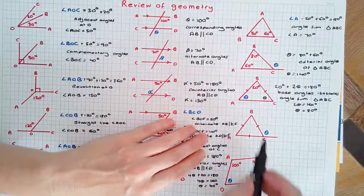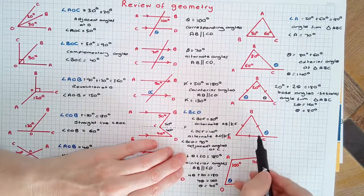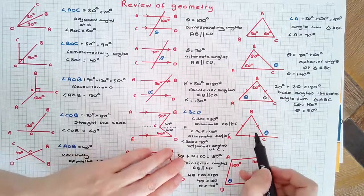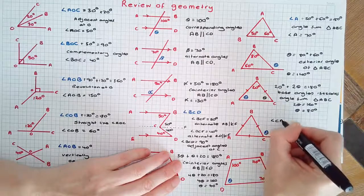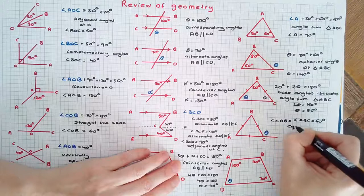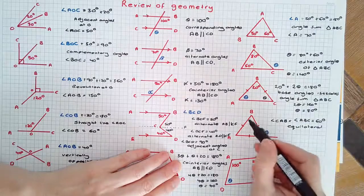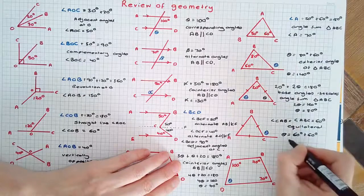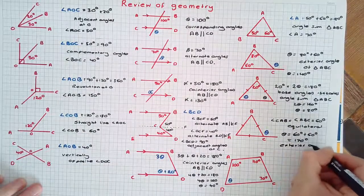Similarly, you may see problems involving equilateral triangles where all three sides are equal and all interior angles are 60 degrees. Using the exterior angle rule, angle CAB is 60 and angle ABC is 60 because it's an equilateral triangle. Therefore theta equals 60 plus 60 equals 120 degrees, using the exterior angle rule.